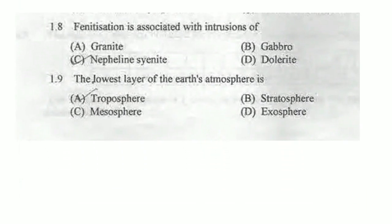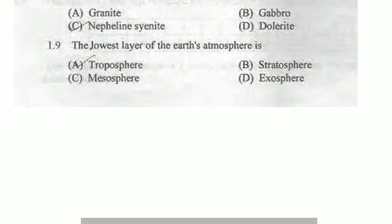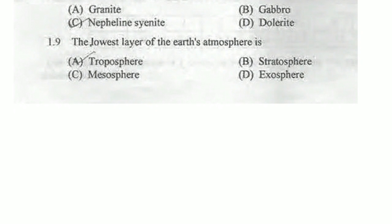Next question: fenitization is associated with intrusions of granite, gabbro, nepheline syenite, or tullerite? Fenitization is a process in which nepheline syenite intrudes with the country rocks. So nepheline syenite — option C — is the correct answer. The lowest layer of Earth's atmosphere is troposphere, stratosphere, mesosphere, or exosphere? The correct order of atmospheric layers starts with the troposphere at the bottom, so troposphere is the correct answer.